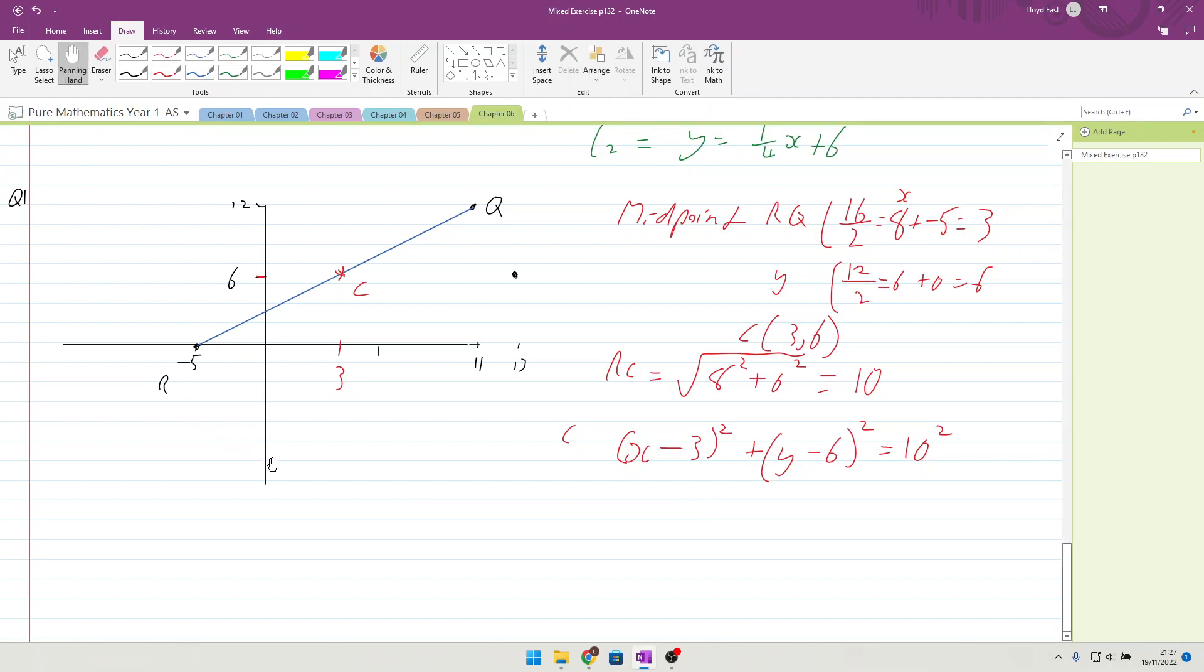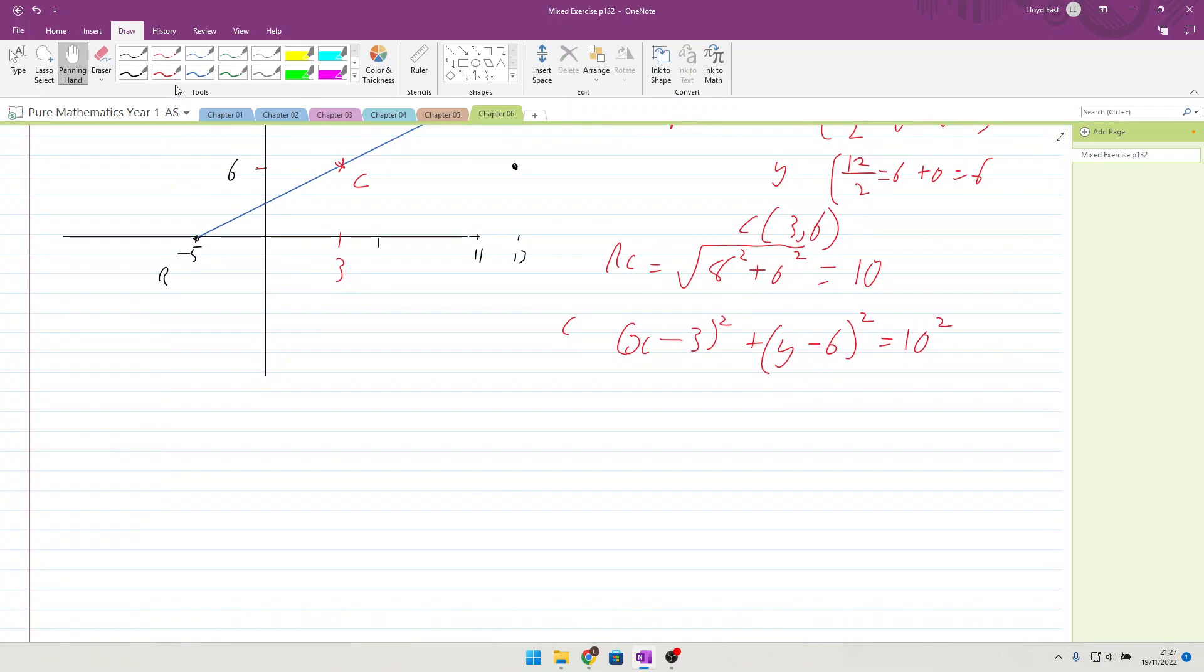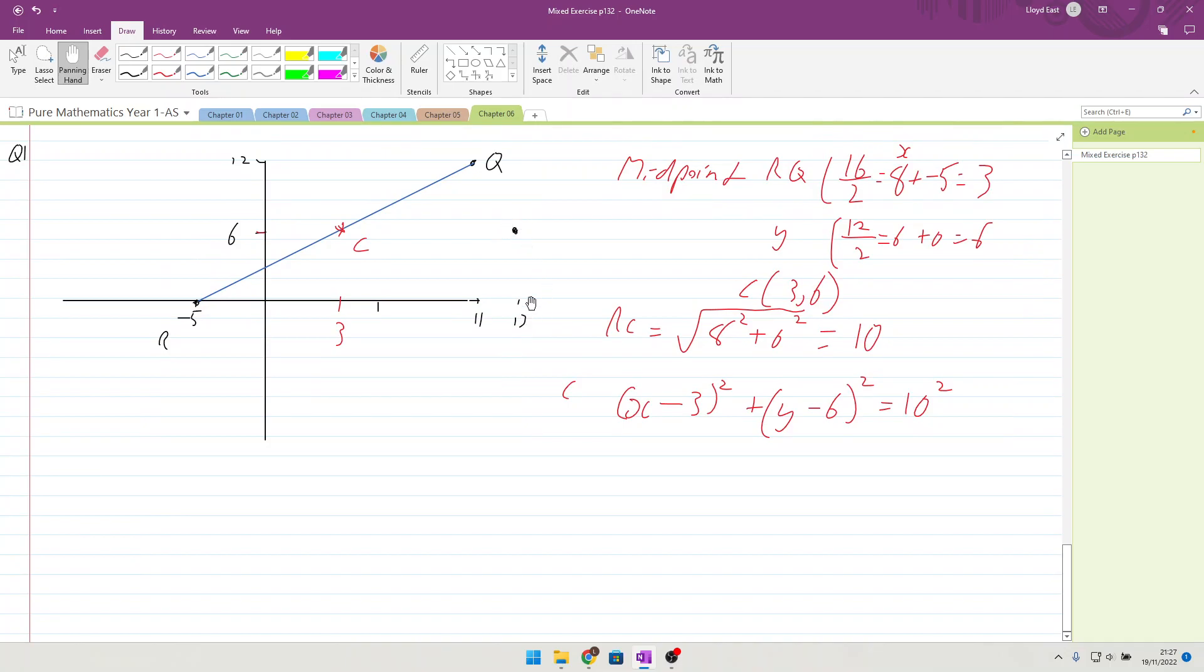Now show that P lies on the circle. P needs to lie on the circle and P, if you remember from the start of the question, was (13,6). So we can just put that in: 13 minus 3 squared plus 6 minus 6 squared equals 10 squared. We end up with 10 squared plus 0 squared equals 10 squared, so P is on the circle. Question 1 finished.